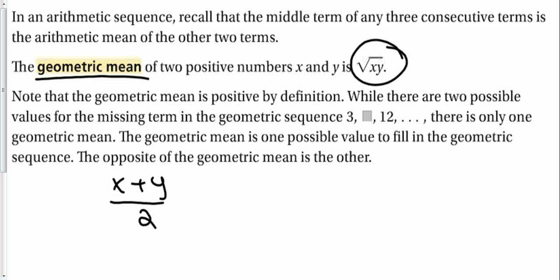So, geometric mean is positive by definition. There's two possible values for some sequences for the missing term. If both the first one and the next one are positive, and you don't have any other information, there's two possibilities for the middle numbers. The positive value or the negative value. Because remember, a geometric sequence can switch from positive to negative. So, if you only have three numbers, you're not sure, you have to put the positive and then negative.